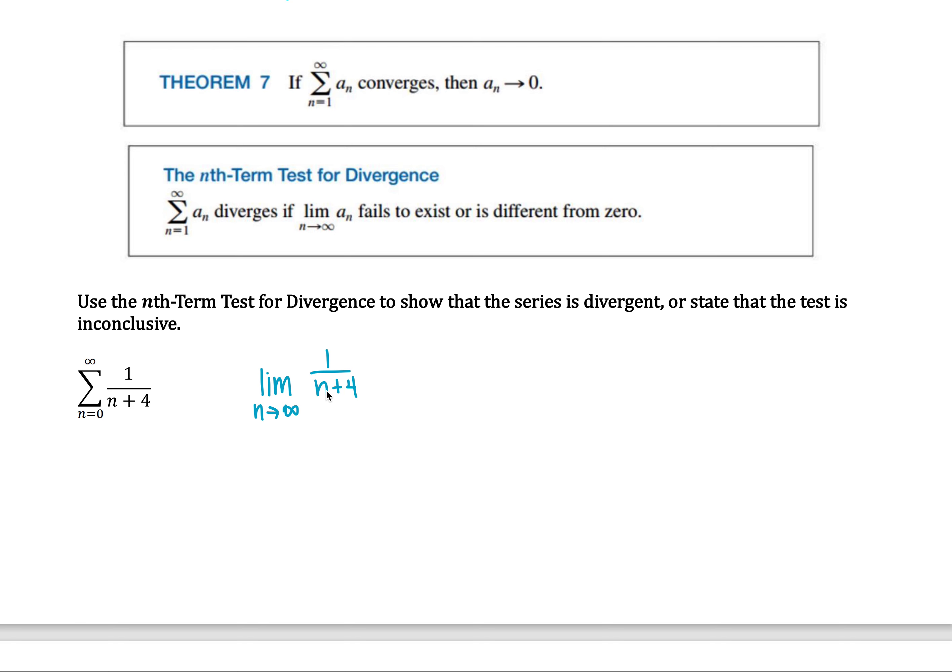well, as n goes to infinity we're going to have one over infinity, this is going to go to zero. That actually doesn't tell us anything. The test here is inconclusive, and in fact this series will diverge. We're just not able to show that with the nth term test.